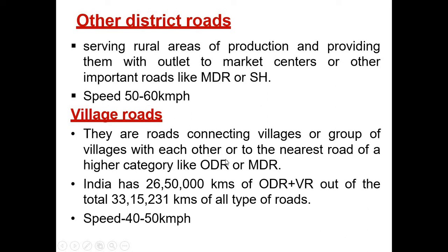Village roads are roads connecting villages or groups of villages with each other or to the nearest road of a higher category like other district roads or major district roads. India has 26,500,000 kilometers of other district roads and village roads out of the total road network of all types of roads. The speed limit for village roads is 40 to 50 kilometers per hour.